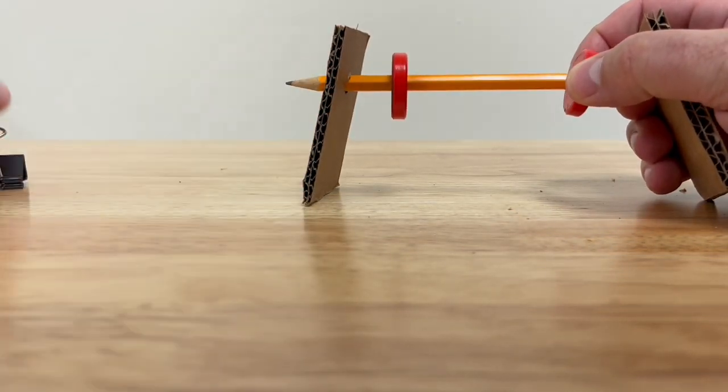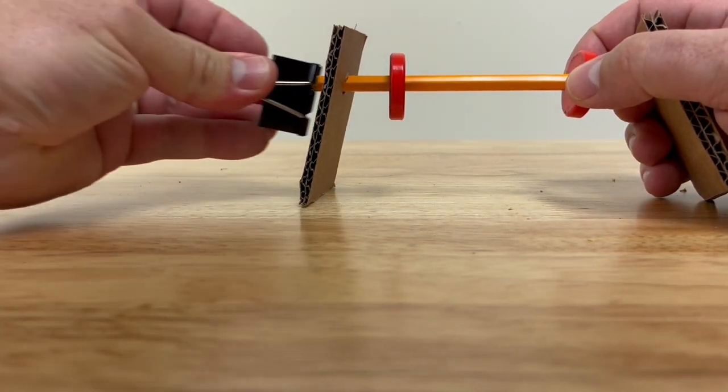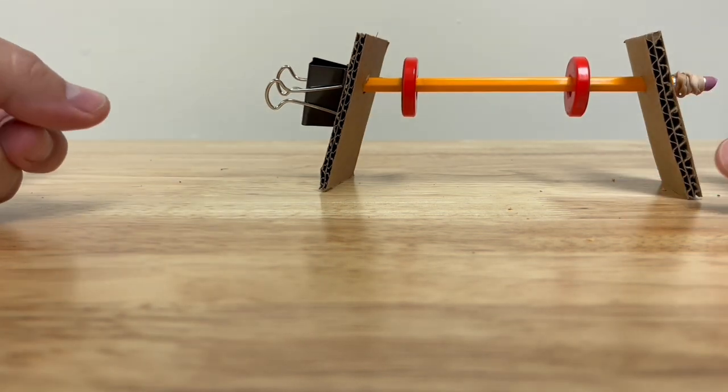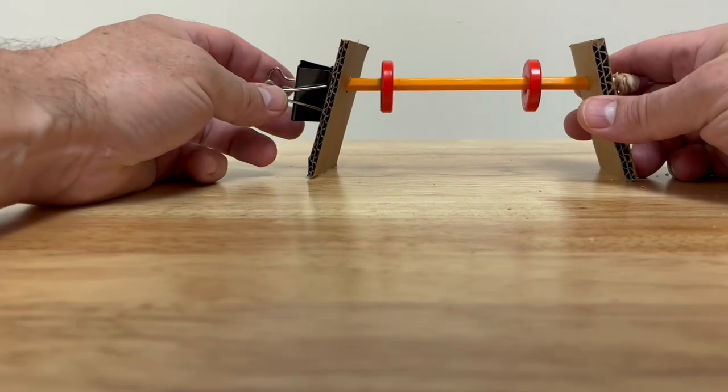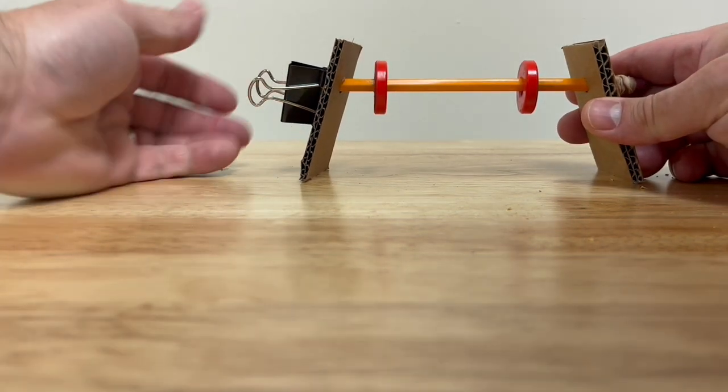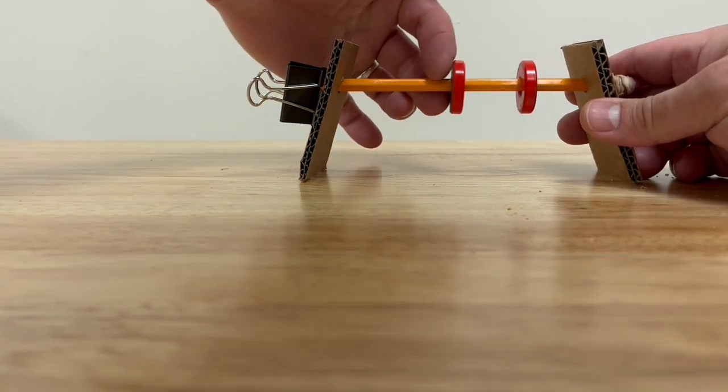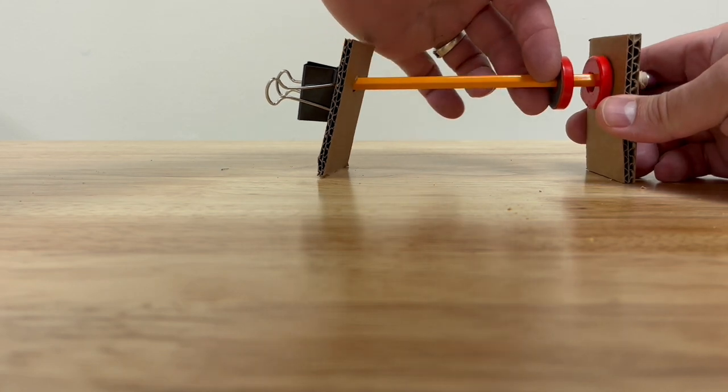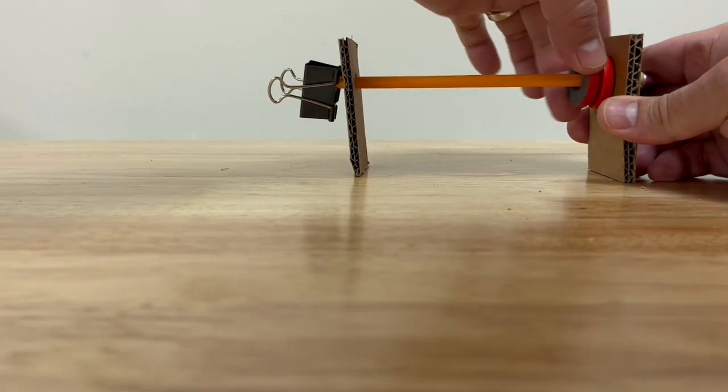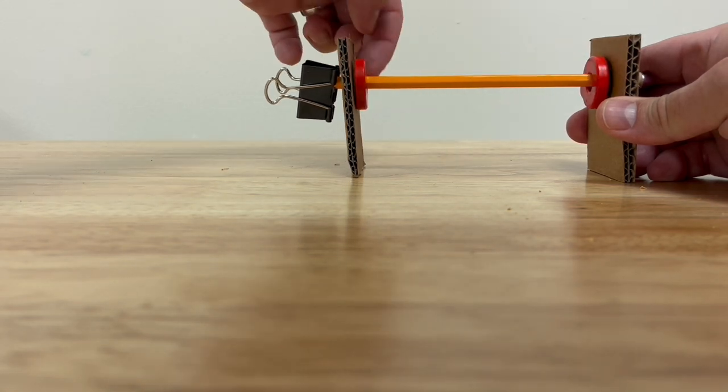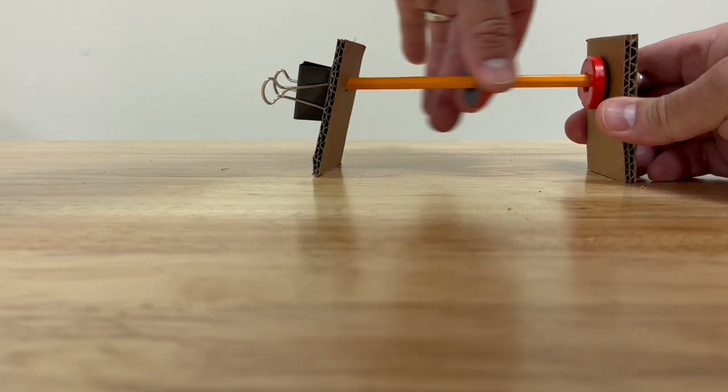Now, if this rod were a dowel, and that were long enough, say maybe another six inches or so, then we could push these all the way to one end and let them go and measure this distance for each trial.